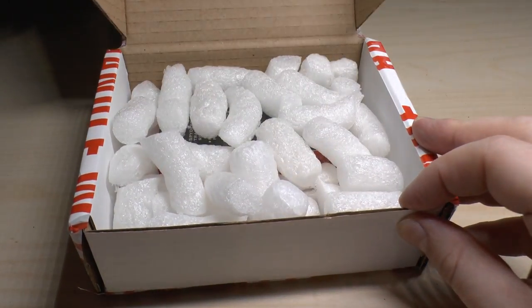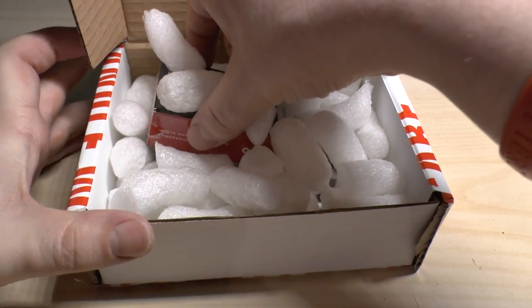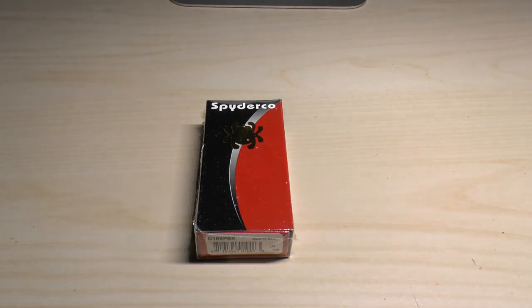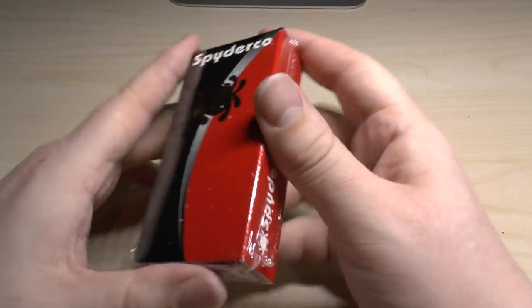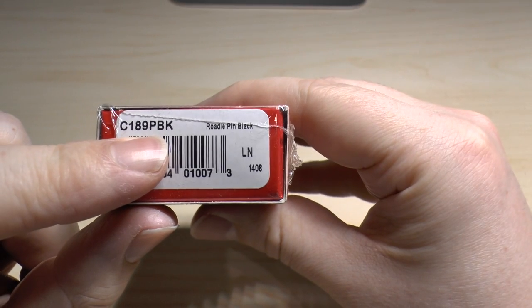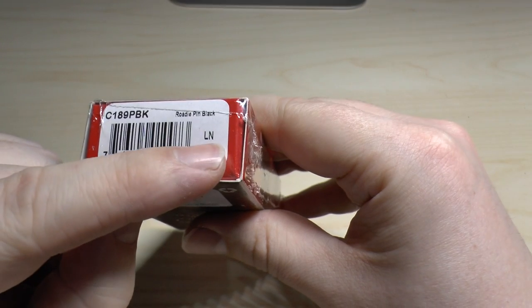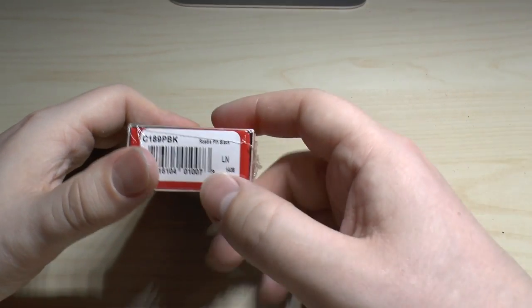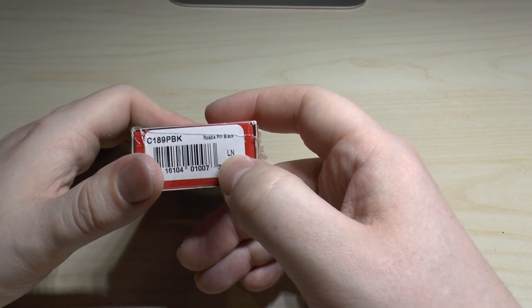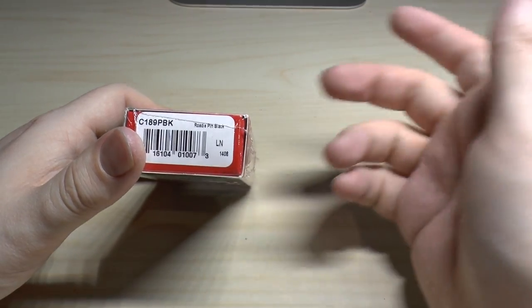And here is the knife itself. It's a very small package, very light, extremely light. If you wanted to know, it's a C189PBK Roadie pin black, and it's LN. It's essentially the month first and the year. So L would be December, N would be 2014. So it was made probably about a month or two ago, it being February.